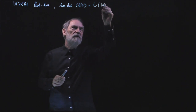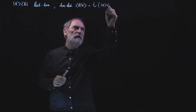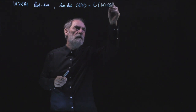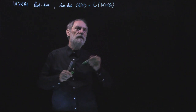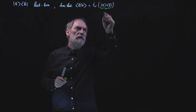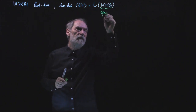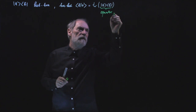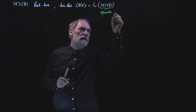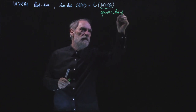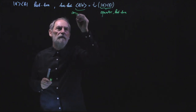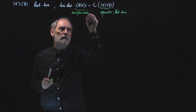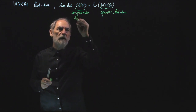If I take the trace of the ket-bra I get the bracket. So here we have an operator — the ket-bra — and over here we have a complex number, which is the corresponding bracket.